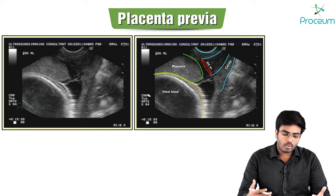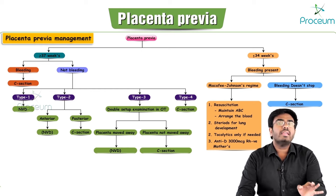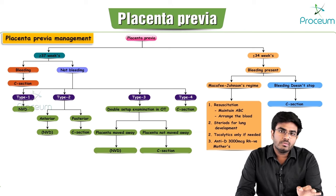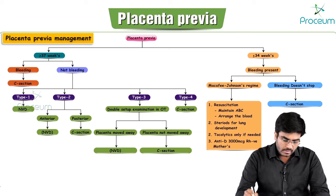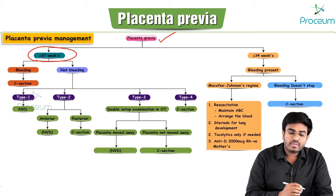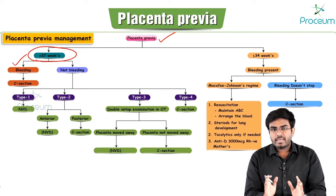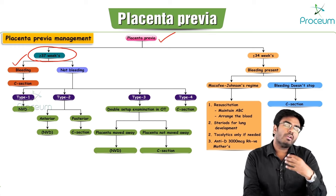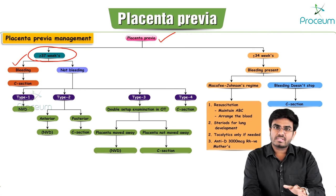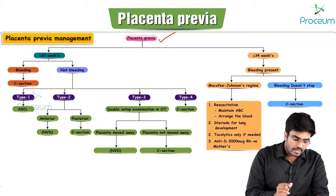The management of placenta previa is very important and commonly tested. After 37 weeks with bleeding: do a C-section. After 37 weeks without bleeding: manage according to placenta previa type. For type 1 or type 2 anterior (minor degree), normal vaginal delivery is possible.